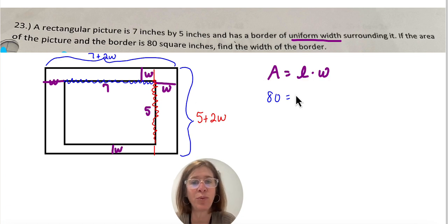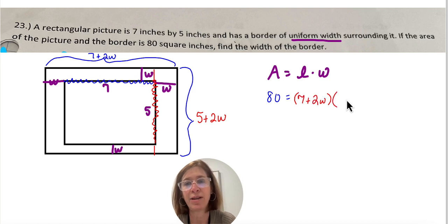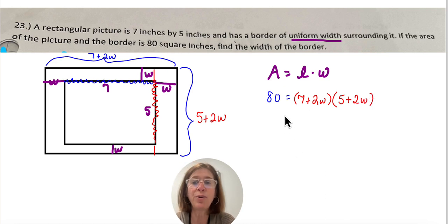Alright, so now I have my length and the width, and I plug them in to my equation. So 7 plus 2W times 5 plus 2W. Alright, so now you actually have to multiply. We have to make this, it's going to become a quadratic equation.